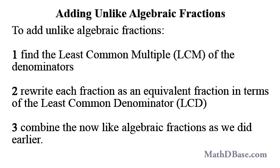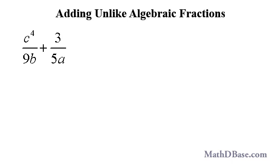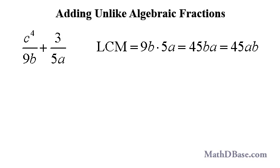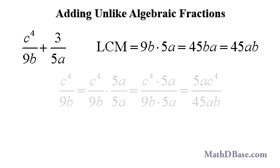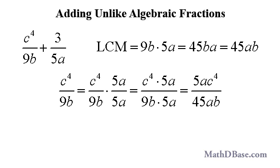If we have c to the 4th over 9b plus 3 over 5a, the LCM is 45ab. c to the 4th over 9b lacks the factor of 5a. Multiplying top and bottom by that factor, c to the 4th over 9b becomes 5ac to the 4th over 45ab.